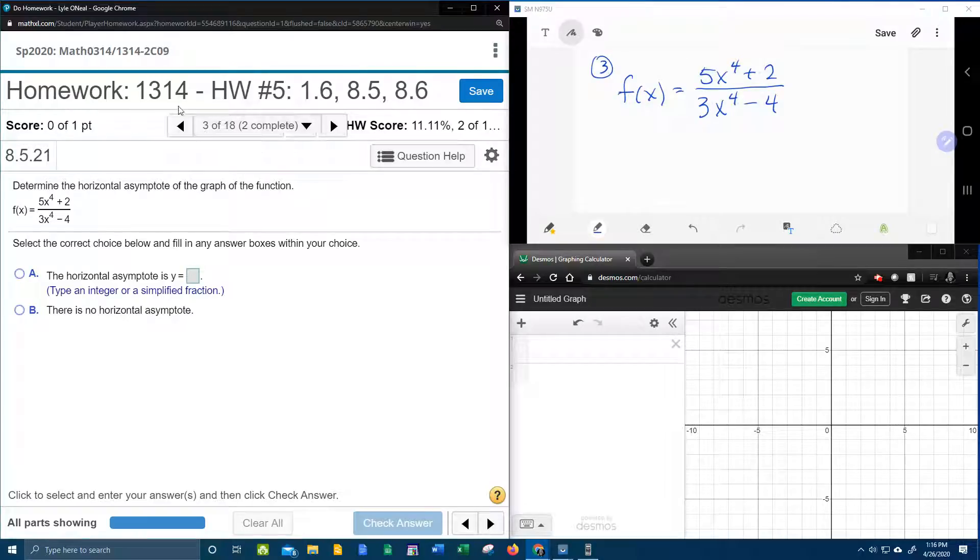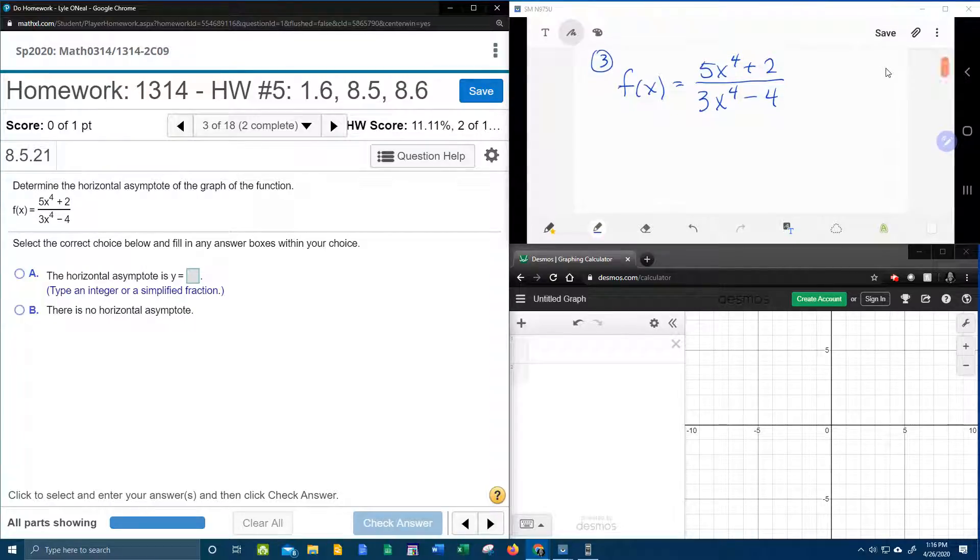All right, here we go. Question number three in our College Algebra homework number five in MyLabMath, and it wants us to determine the horizontal asymptote of the graph of the function. Here's our function. We've got it written down up here in the window so we can work on it.